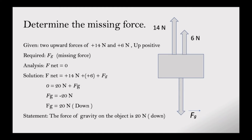Let's take an example: determine the missing force. We are given two upward forces of 14 newtons and 16 newtons. Taking up as positive, we need to find Fg. Using Fnet equals zero: Fnet equals 14 newtons plus 16 newtons plus Fg. Zero equals 30 newtons plus Fg, so Fg equals negative 30 newtons — that is, 30 newtons downward. Statement: the force of gravity on the object is 30 newtons down.